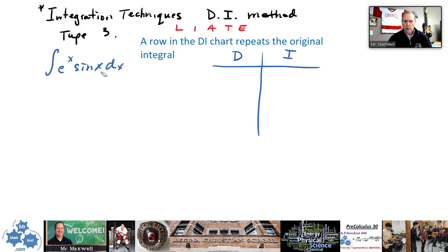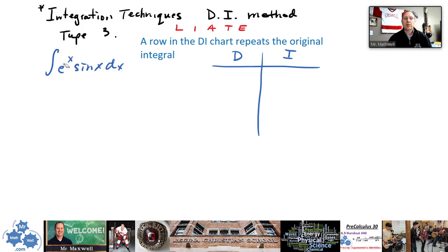An example of this would come with the integral of e to the x times sine x dx. Remember LIATE — this is how we determine which one we're going to differentiate. Logarithms? No ln. Inverse trig? No inverse trig. Algebra, like a polynomial? Nope. So T is trig — trig comes before exponential. So we're going to differentiate sine x, and integrate e to the x.